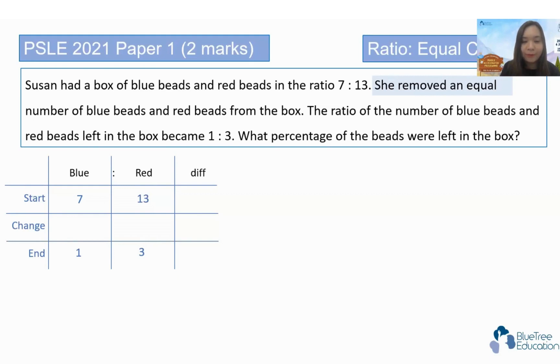Yes, correct. So some of you put difference unchanged, very good. Because let's just say if I'm going to put it into a value instead, if I have 10 blue and you have 5 red, our difference is 5, right? Now, if I were to remove 2 from my side and you remove equally 2 from your side, I will become 8 and you'll become 3. Our difference is still 5. So when it's equally removed, our difference remains the same.